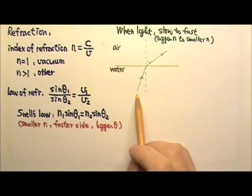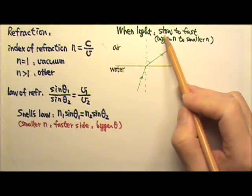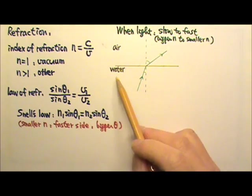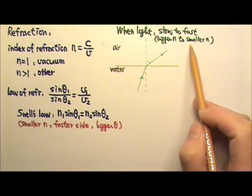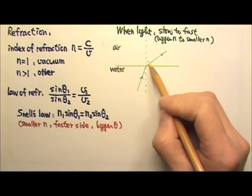For example, when light goes from water into air, from slower medium to fast medium, bigger n for water to smaller n for air, the angle gets bigger.